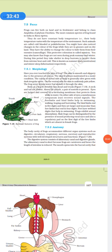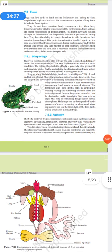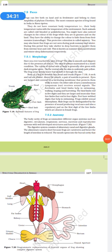Next, coming to frogs. Frogs, we know they are amphibians. They can live both in water and on land. The scientific name is Rana tigrina. They have a variable body temperature. The body temperature varies with the temperature in the environment. So they are basically the cold-blooded or the poikilotherms. Now coming to the morphology of a frog. We see the frog has got a head and a trunk. A neck and tail is absent. Above the mouth, a pair of nostrils is present. Eyes are bulged out and is covered by the nictitating membranes that protects them while in water. On the other side of eyes, a membranous tympanum ear, which receives sound signals. The forelimbs and hind limbs help them in swimming, walking, leaping and burrowing. The hind limbs end in five digits and they are larger and muscular than the forelimbs, which end in four digits. Feet have webbing that helps them for swimming. Frogs exhibit sexual dimorphism. Male frogs can be distinguished by the presence of the sound-producing vocal sacs. Also, a copulatory pad on the first digit of the forelimbs are present in the male frog, which are absent in the female frog.